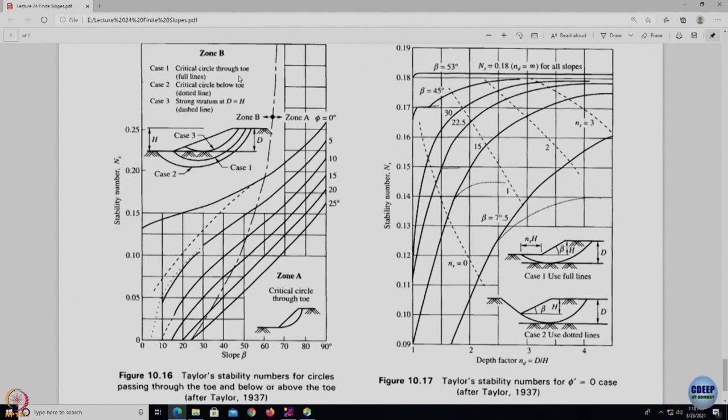Case 1 is critical circle through toe full line, case 2 critical circle below the toe as the dotted line, and the third is case 3 where we have a very strong strata depicted as d into h which again is the dashed line. X axis is slope angle, Y axis is stability number Ns, the friction angle under undrained condition increases from top to bottom.